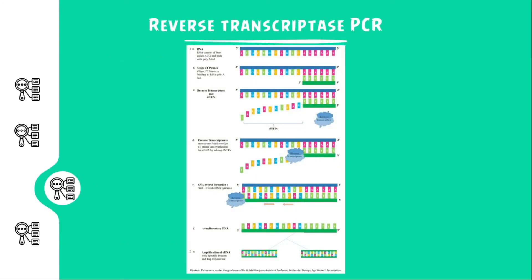Here is a representation of reverse transcriptase PCR. We can see that the RNA molecule has a start codon and a poly-A tail. The primers, which are usually oligonucleotides, bind to the poly-A tail, and with the help of reverse transcriptase and dNTPs the new cDNA strand is created. The cDNA is a single-strand molecule and this is amplified to produce amplicons of great number using Taq polymerase.